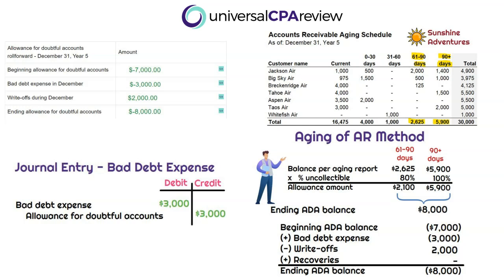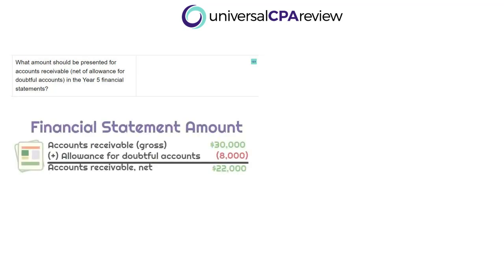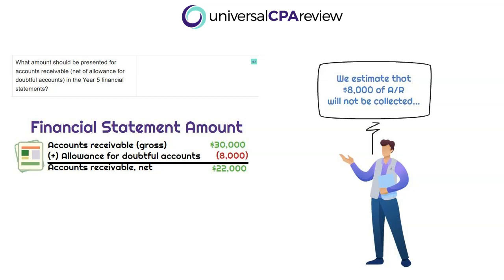The fundamental difference between the gross AR and the ADA roll forward is that for the ADA, we had a method to calculate the ending required balance, then had to increase or decrease bad debt expense to reach that ending allowance balance. For the last part of the simulation: what amount should be presented for accounts receivable net of allowance for doubtful accounts in the year five financial statements? We state it at net realizable value — gross AR of $30,000 minus the $8,000 allowance equals $22,000.